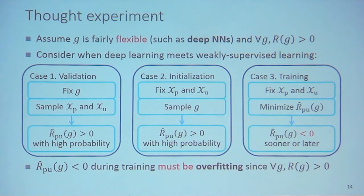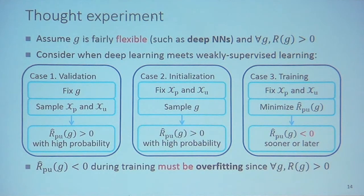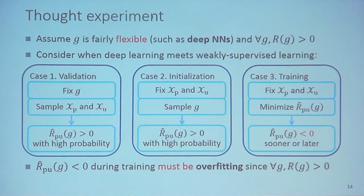The third case is training, which is most different. Fix the data and minimize the empirical risk. When minimizing, we select classifiers to decrease the empirical risk. So long as the classifier is flexible enough, sooner or later we will obtain a negative empirical risk. And this negative empirical risk must mean overfitting, because we assumed the true risk is positive for any classifier.